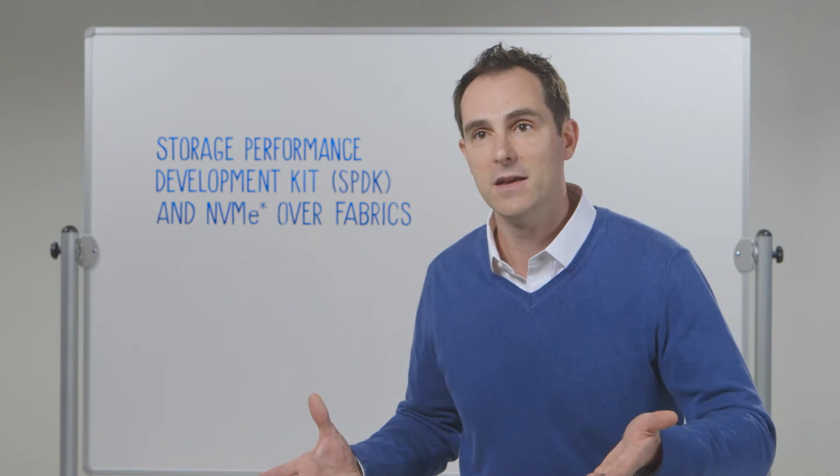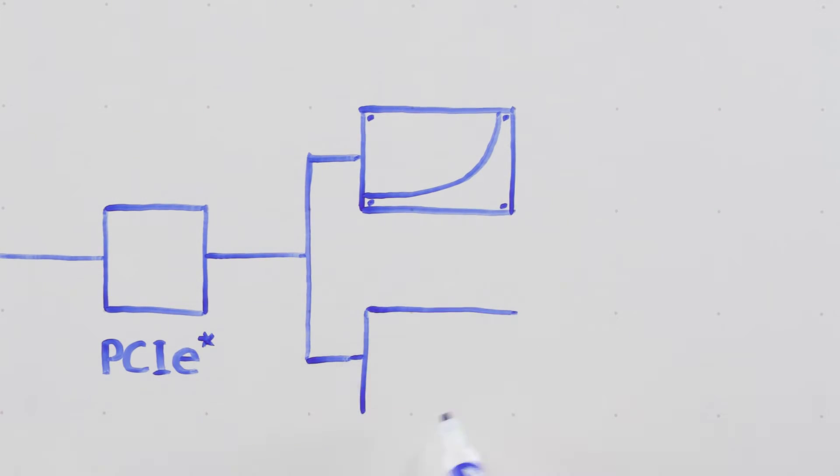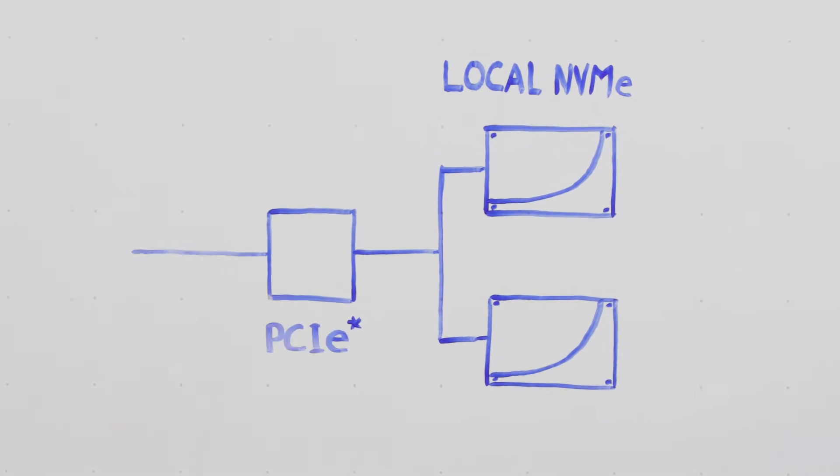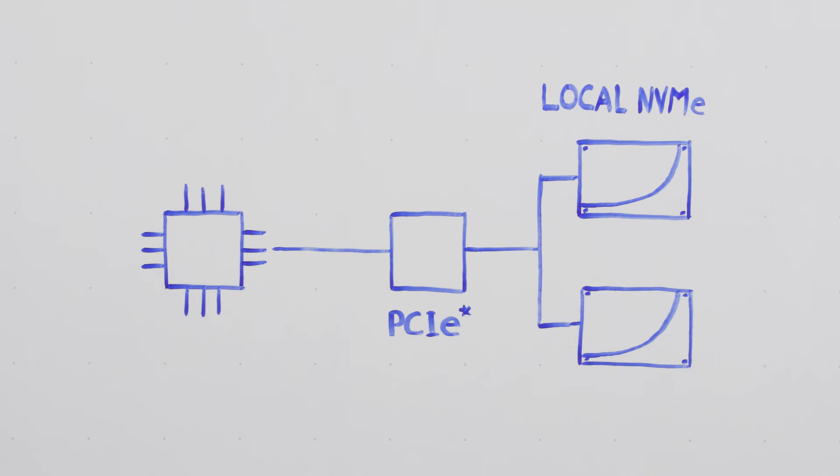NVMe is great because it allows you to directly attach your storage to the PCI bus. That means it's as close as it gets to the CPU. It makes efficiency much higher.